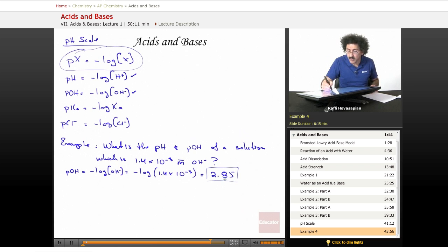So notice, 2.85 is a much more attractive number than 1.4 times 10 to the negative 3, at least that's what many people think. I personally don't think so, but that's fine. You know, I'm a chemist, we deal with pHs, we'll deal with pHs.